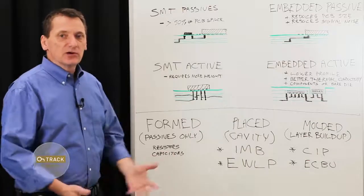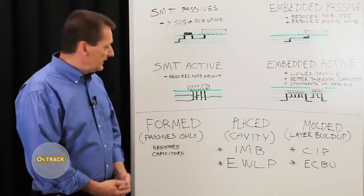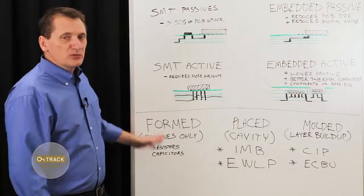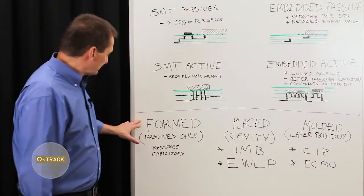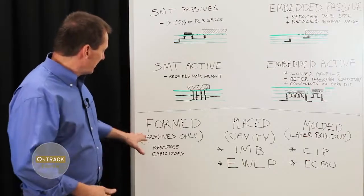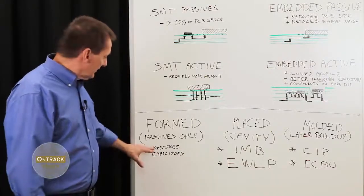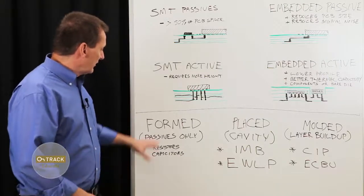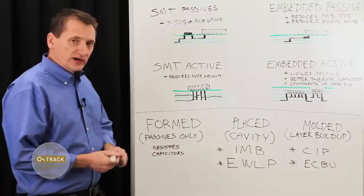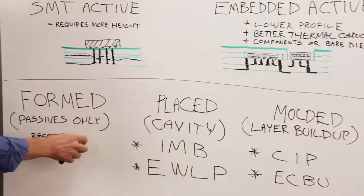Now let's take a look at the different types of techniques that fabricators use to implement embedded components. The first category is probably one of the earliest to evolve and it's referred to as formed. Formed means that we're forming passives out of special materials to implement resistors and capacitors. So the formed technique is limited to just these two passive types.